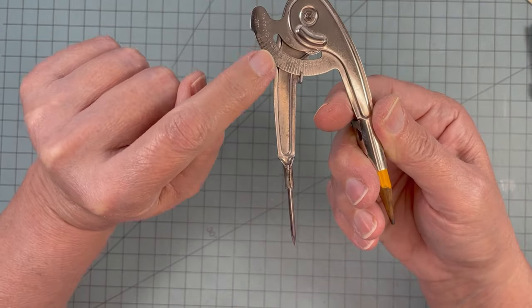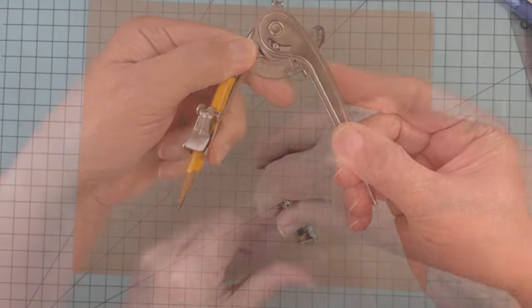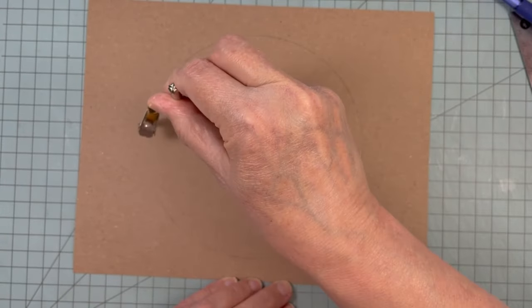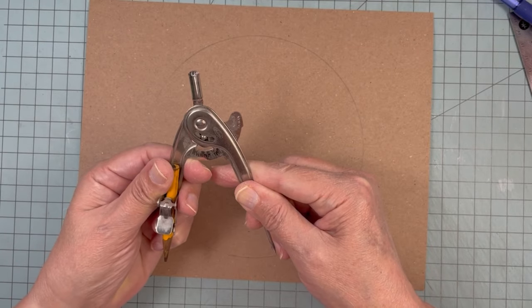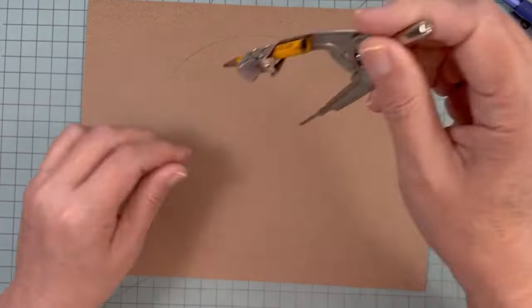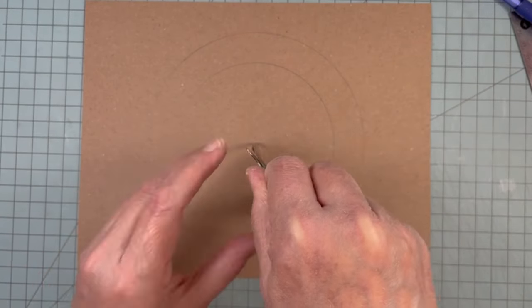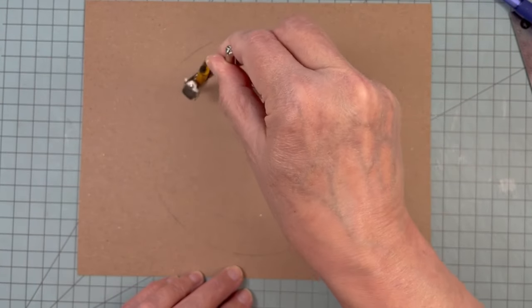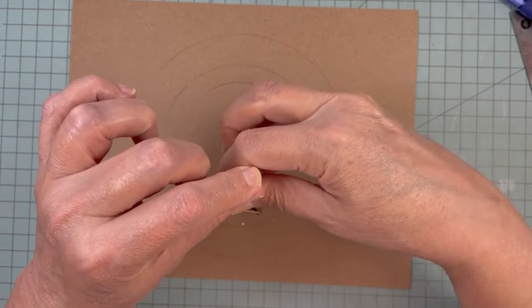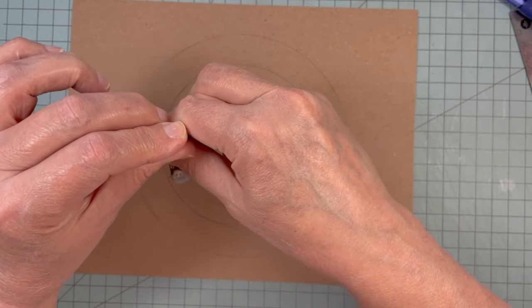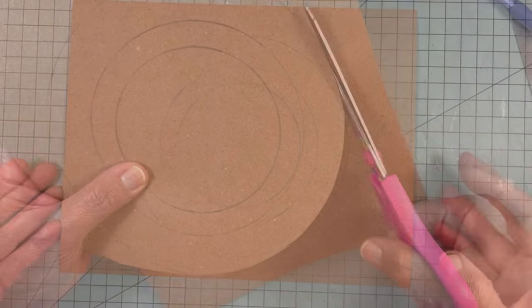I used a compass to help me draw a large circle onto a piece of cardstock. I draw a circle within a circle, lining up my center mark. And now I'm drawing another circle within that other circle that will give me some smaller size tubs.